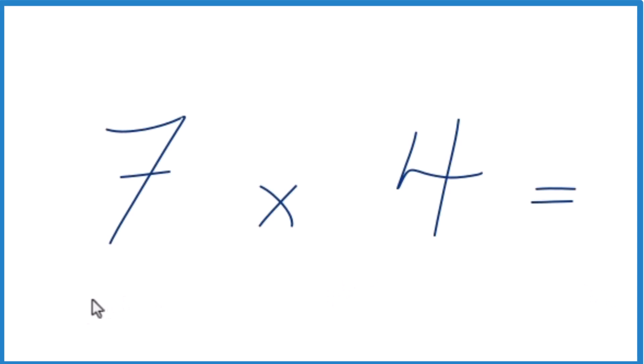So in this video, we're going to look at 7 times 4, so the product of 7 times 4. And we'll look at it two ways.